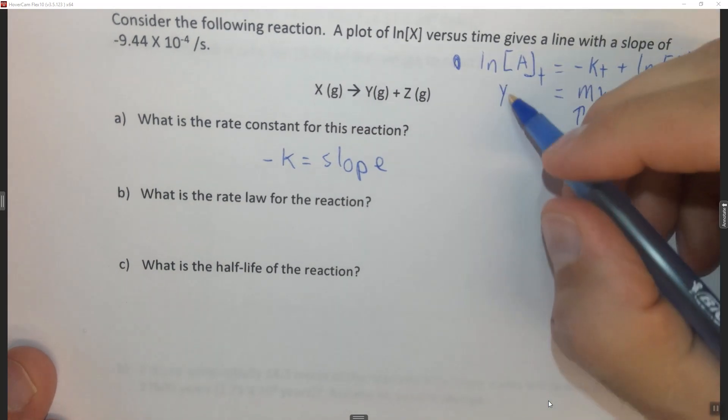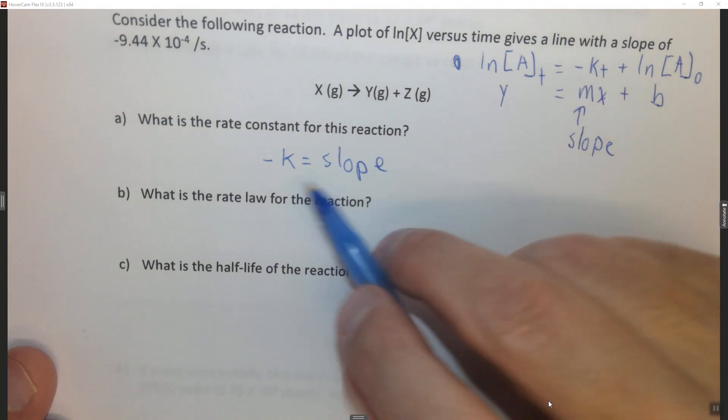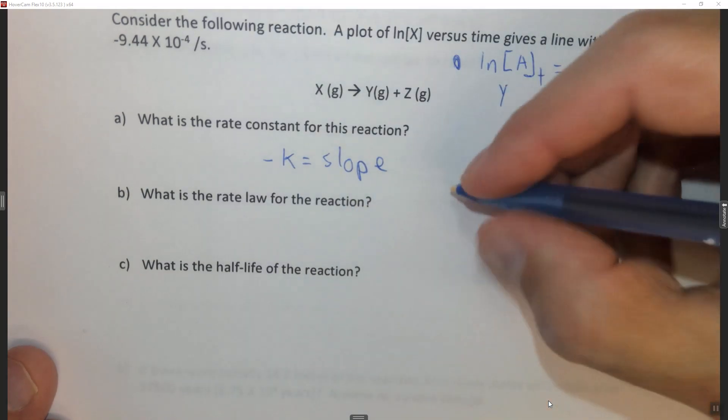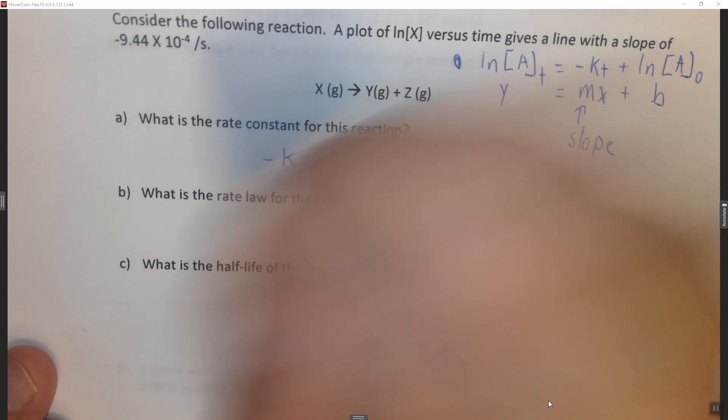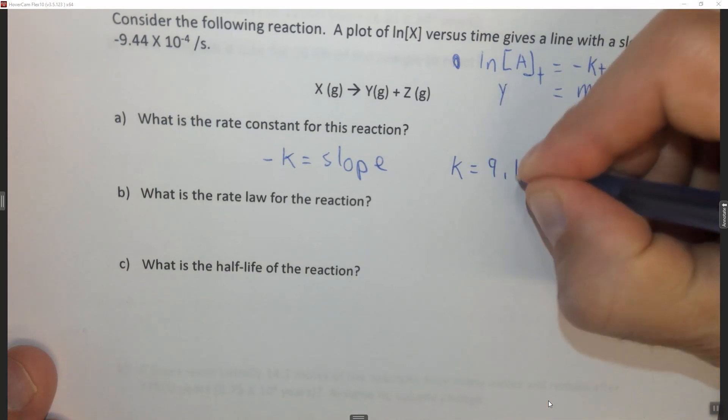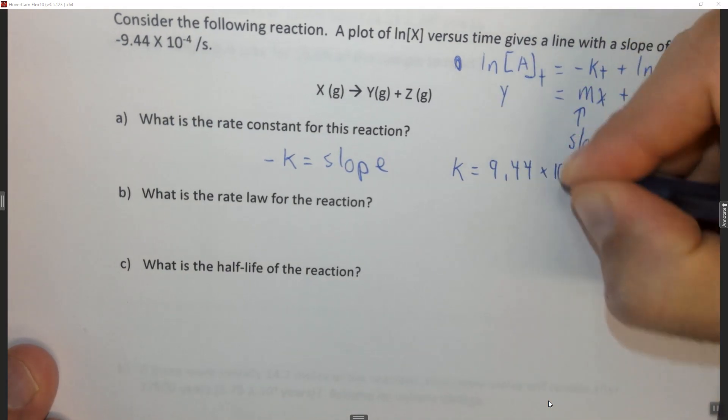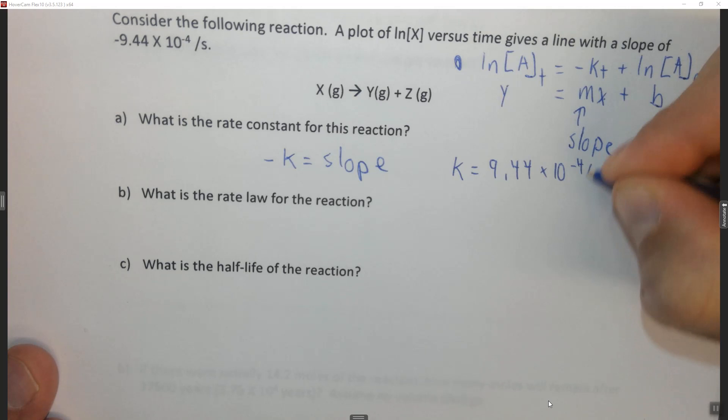So again we put on the x-axis t, we put on the y-axis ln of A, so the negative slope, which in this case k is equal to just this value times negative 1, which is 9.44 times 10 to the minus 4 per second.